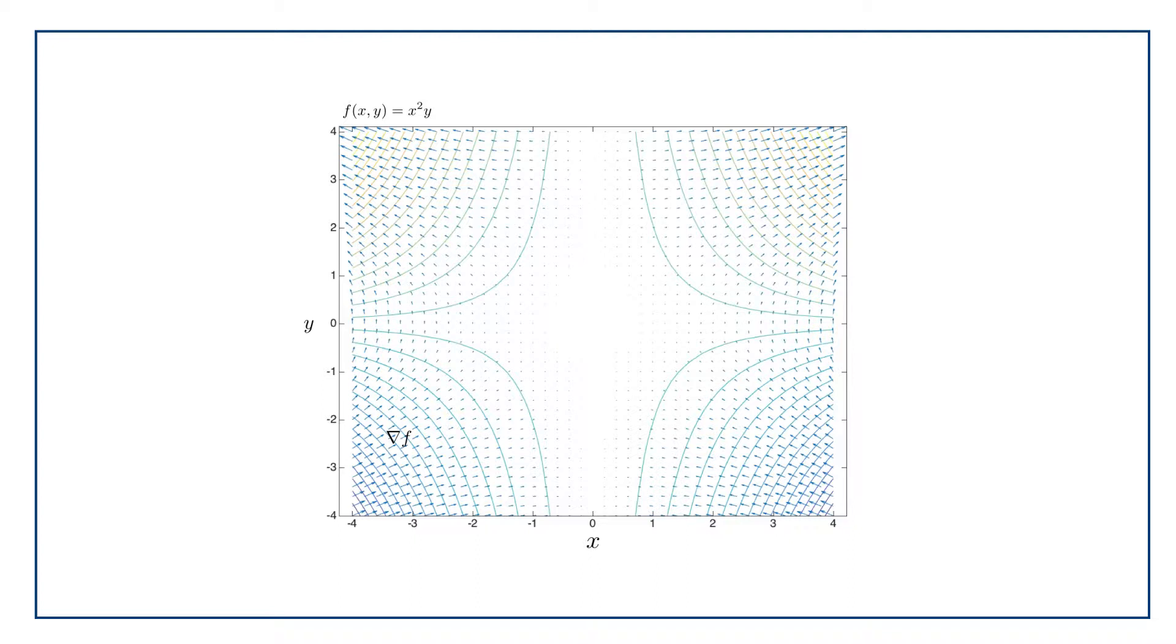So here's the contour map. And what I've done is I've used the gradient function in MATLAB to plot out the gradient perpendicular to the contours everywhere in the space. The low sides are at negative y down here, and the high sides are at positive y up here.